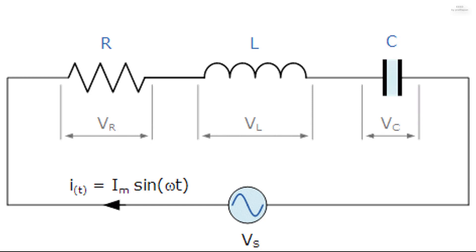The series RLC circuit has a single loop with the instantaneous current flowing through the loop being the same for each circuit element. Since the inductive and capacitive reactances XL and XC are a function of the supply frequency, the sinusoidal response of a series RLC circuit will therefore vary with frequency F. The individual voltage drops across each circuit element R, L and C will be out of phase with each other, defined by I_T = I_max sin(ωt).